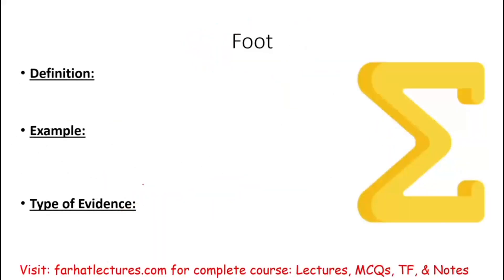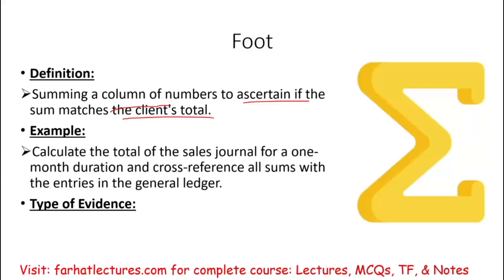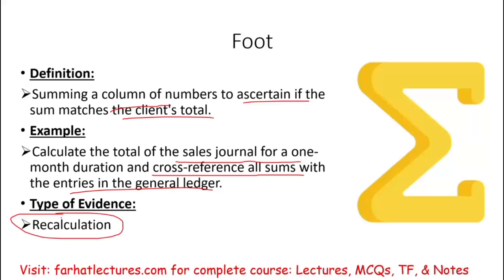Footing is another procedure. Foot means totaling a column of numbers to make sure the sum matches that of the client. The reason we differentiate between recompute and foot is that foot specifically means adding a column — very specific instructions. An example is to calculate the total of the sales journal for one month and cross-reference all the sums with entries in the general ledger. This is part of recalculation, because the auditor is recalculating what was already computed.